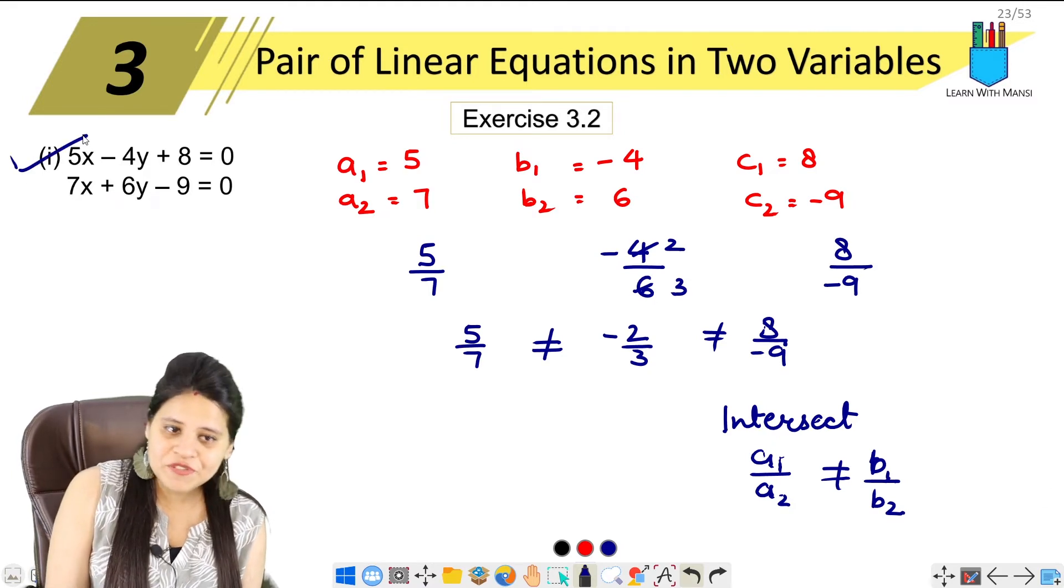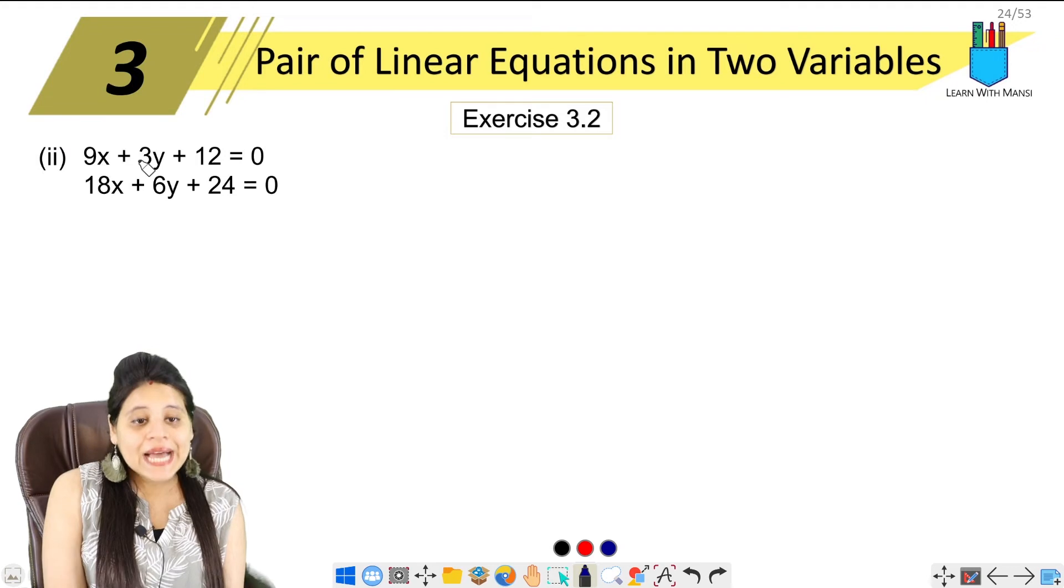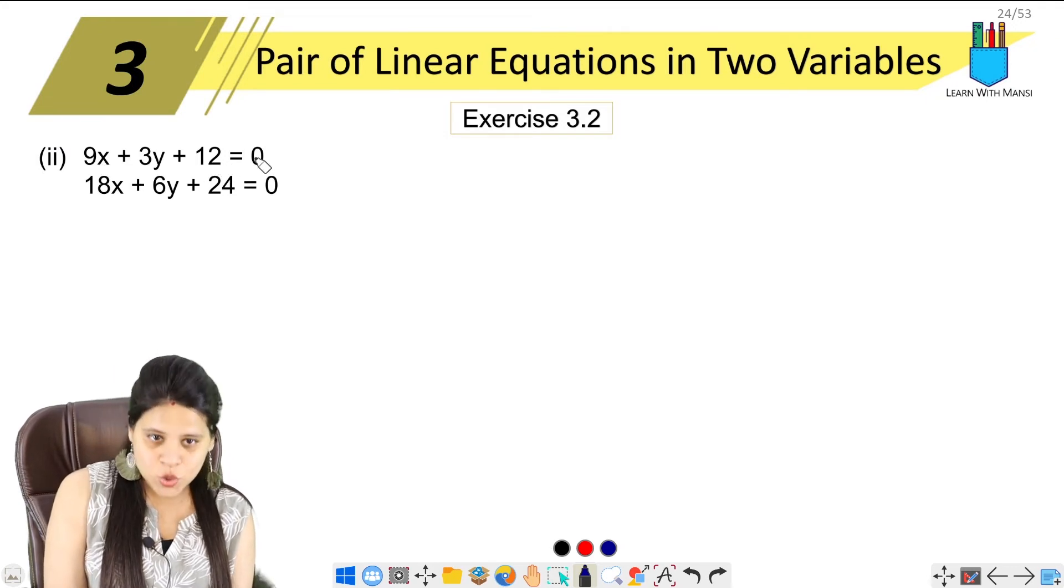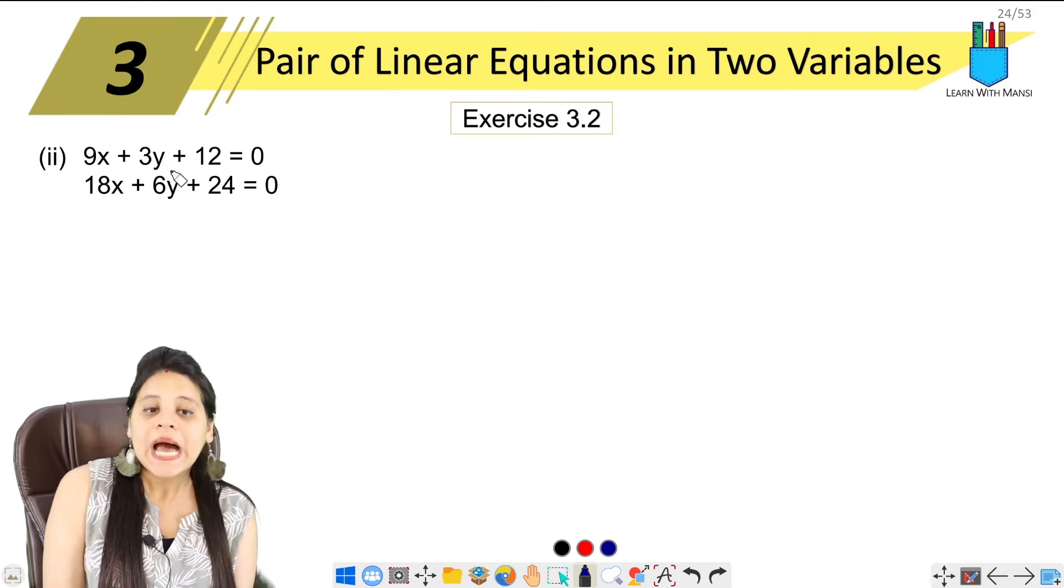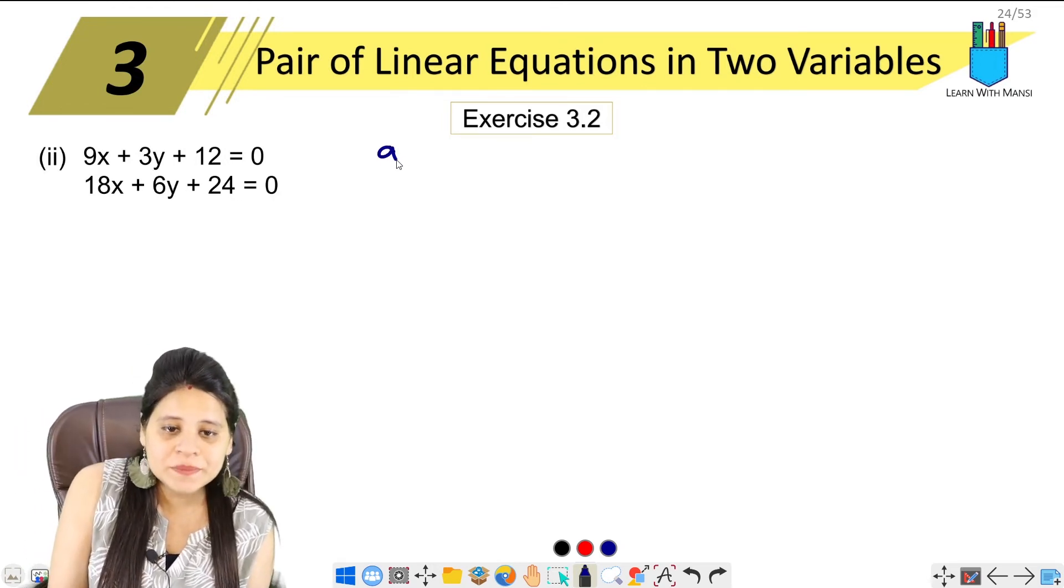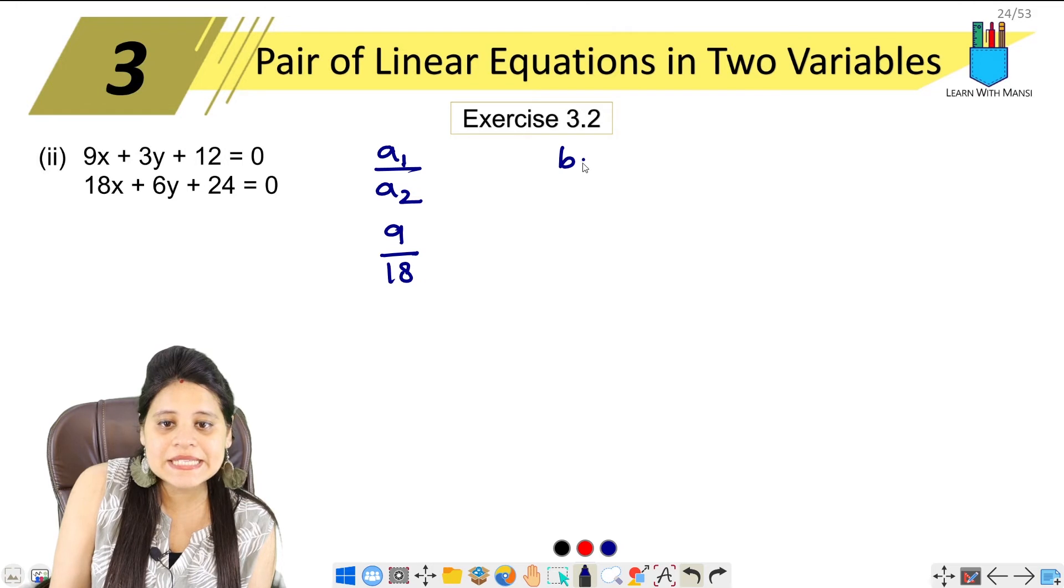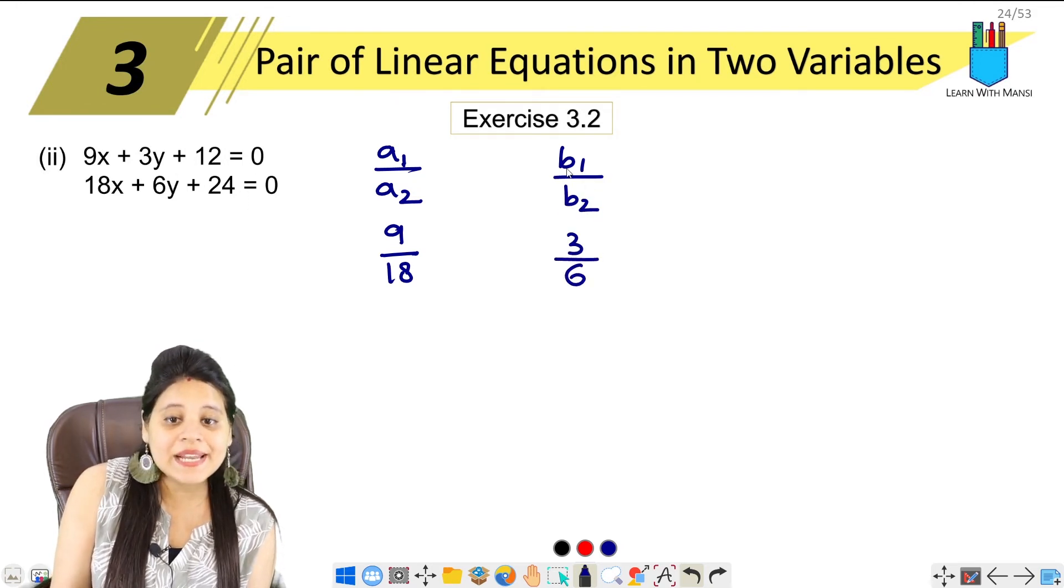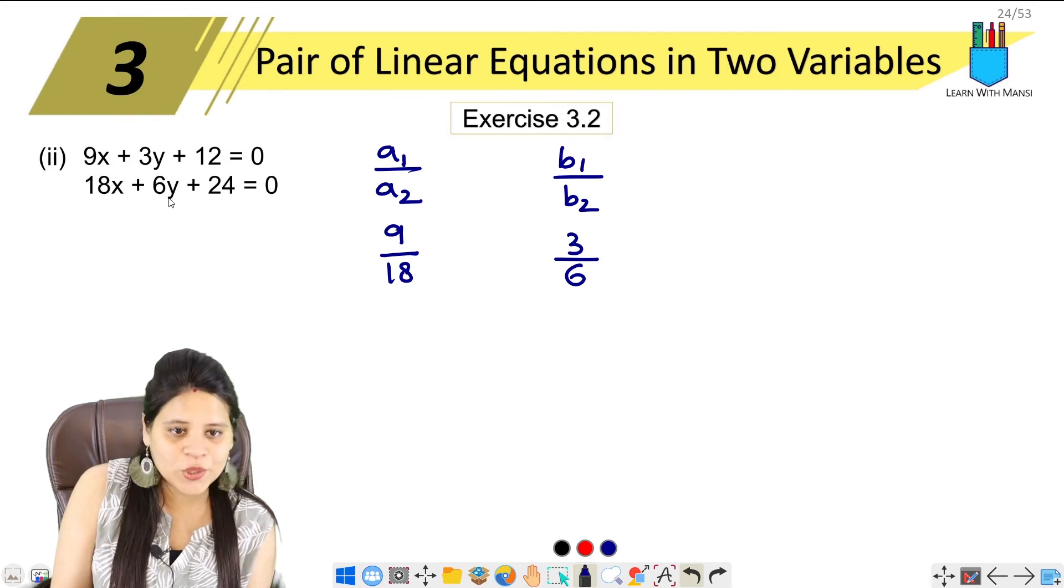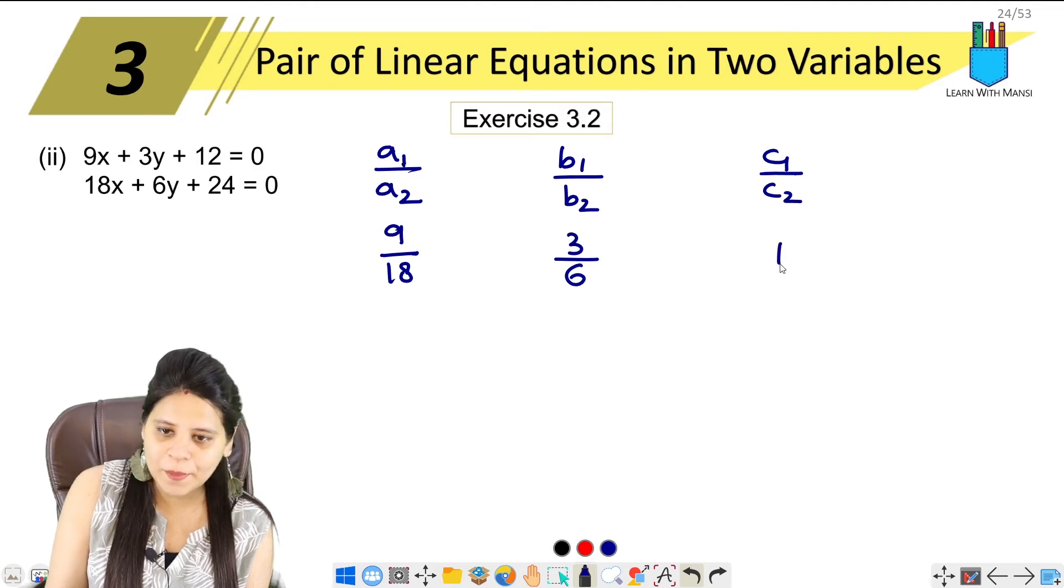So this was the first part. The next part is part two: 9x plus 3y plus 12 equals 0, and 18x plus 6y plus 24 equals 0. Now we see, a₁ upon a₂ is 9 upon 18, b₁ upon b₂ is 3 upon 6, and c₁ upon c₂ is 12 upon 24.